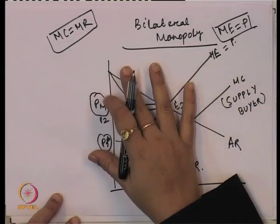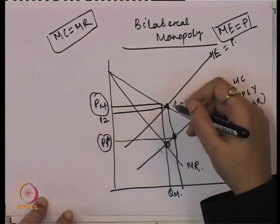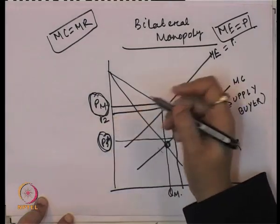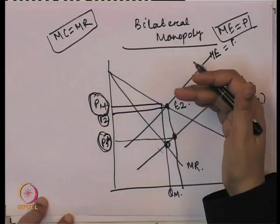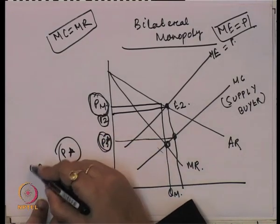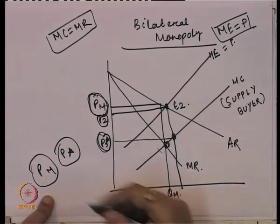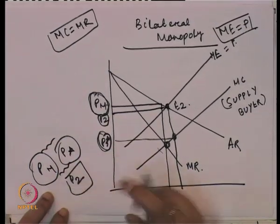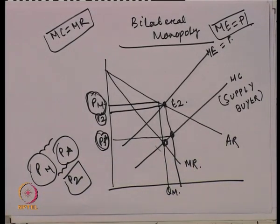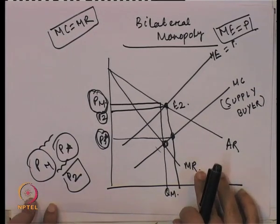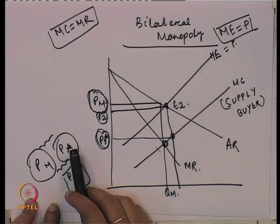This is the monopsonist price, and through bargaining, neither party will accept PM nor will they accept P*, because the price they will propose will be between PM and P*. PM is the monopolist price and P* is the monopsonist price, and they will devise a price between PM and P* — decided through the bargaining strength of both the buyers and sellers.